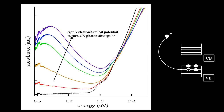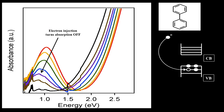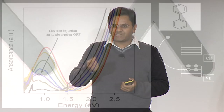Of course it wouldn't be interesting if you couldn't turn it off. By applying the reverse potential you push the electrons back into the tiny nanocrystal and turn the transistor off. What I'm showing you here is the smallest transistor that works — that does bit operations — with photons.